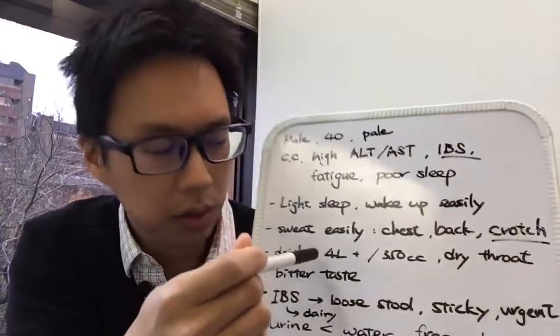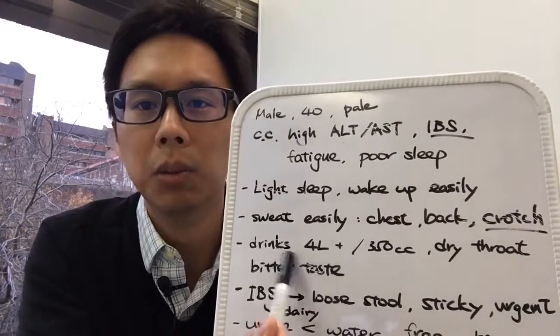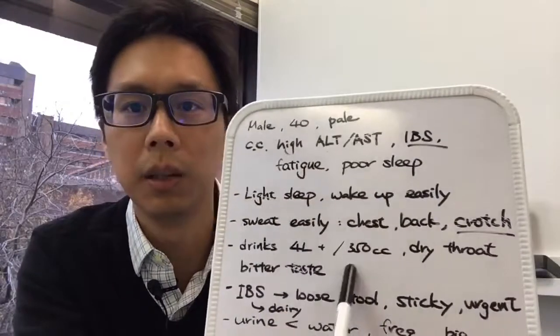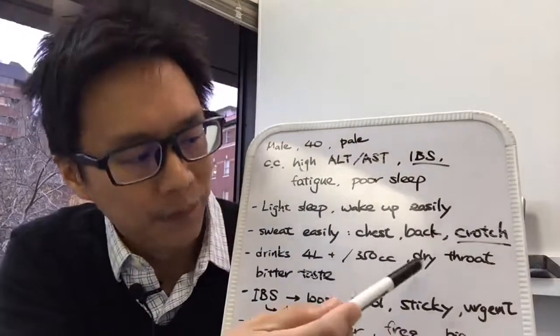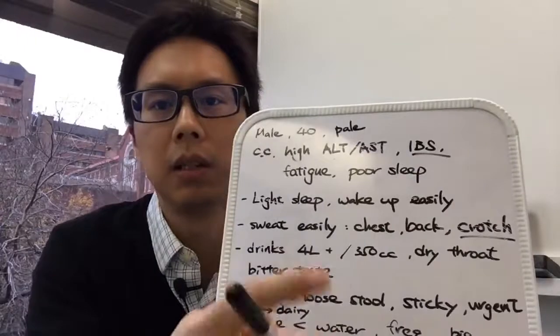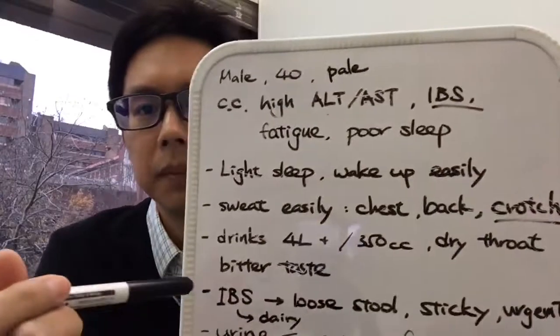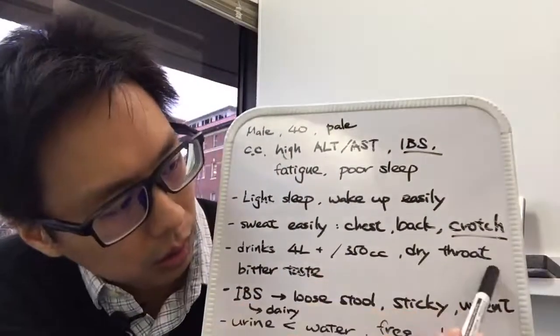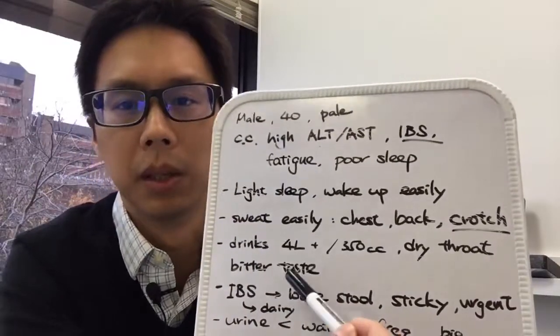He's very, very thirsty. He drinks about four liters or more of water per day. Each time he needs to drink a little bit more than a cup, which means he's very thirsty. For someone who's not very thirsty, they don't drink the whole cup of water at one time. He has complaints of dry throat and there is a bit of a bitter taste in his mouth.